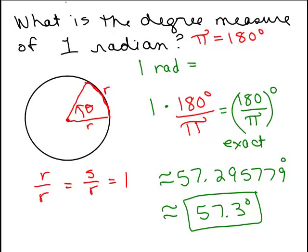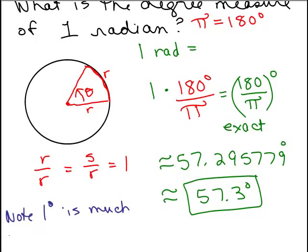So note is the important part. 1 degree is much smaller than one radian. So it's very important. If you want to write your answer in degrees, you need to use that degree symbol. If you just write the number 1 or you write 1 radian, it means it's not in degrees.